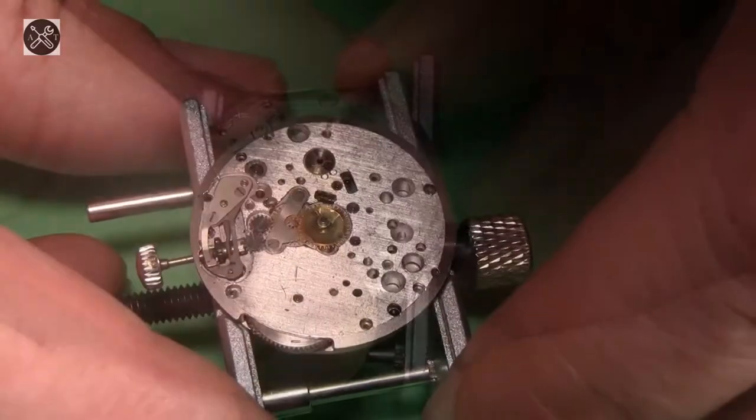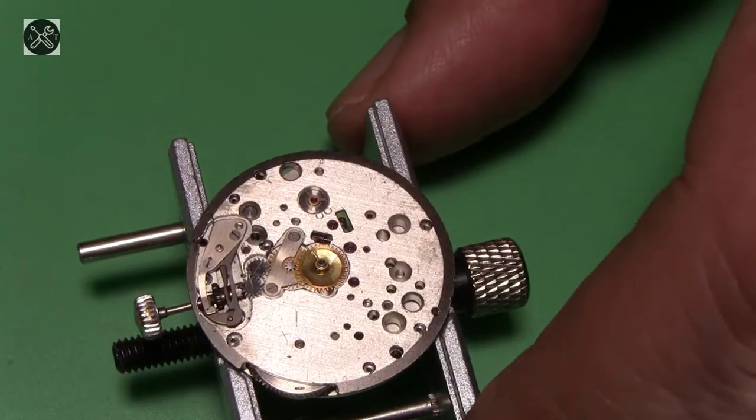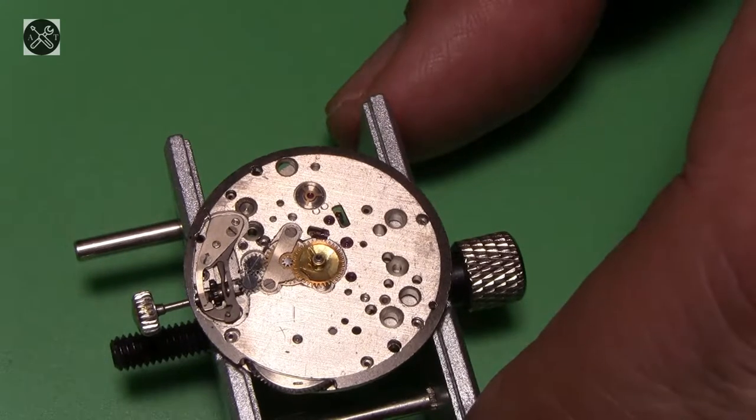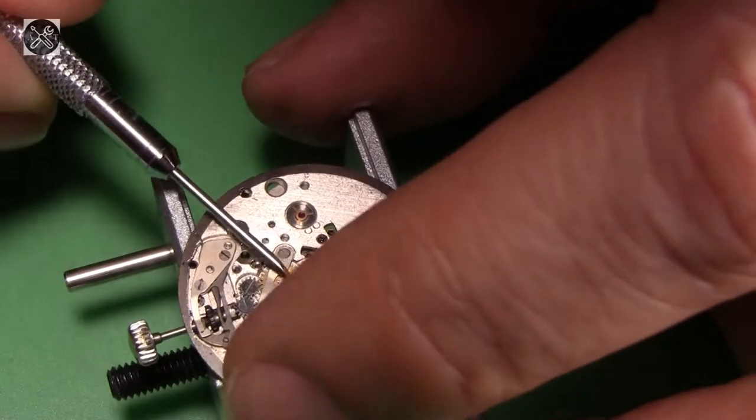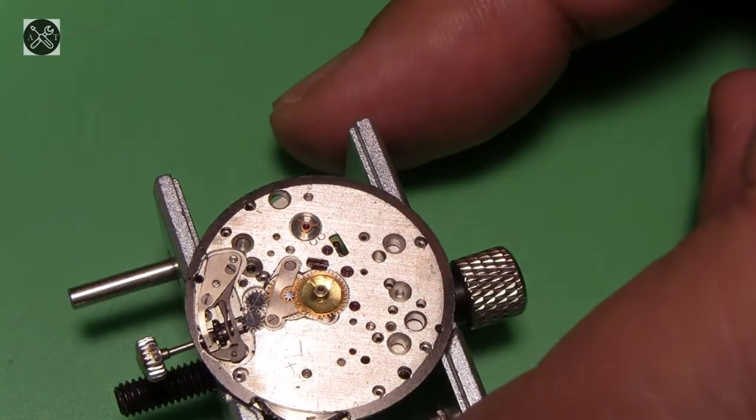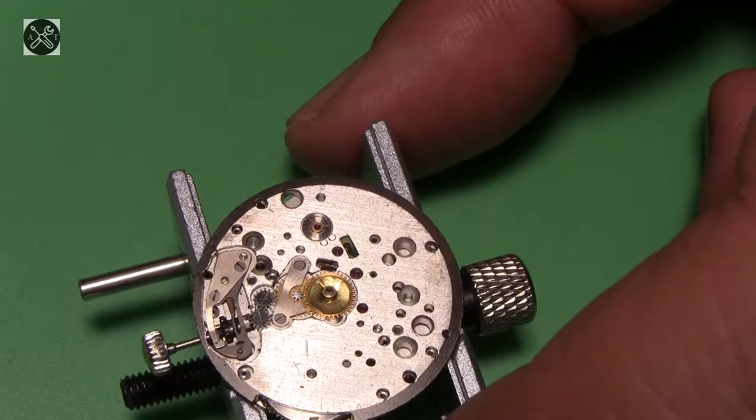Welcome to part 2 of 3 of Polyglot Disassembly. This is the Polyglot 2609. And to continue on, I'm working on the dial side.